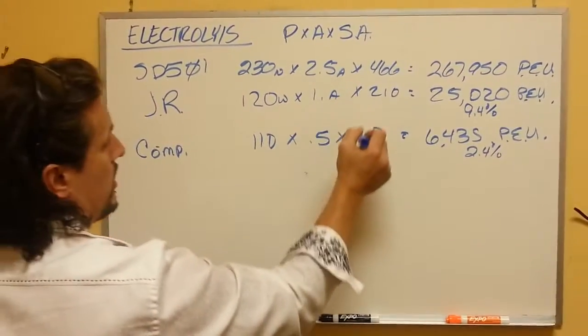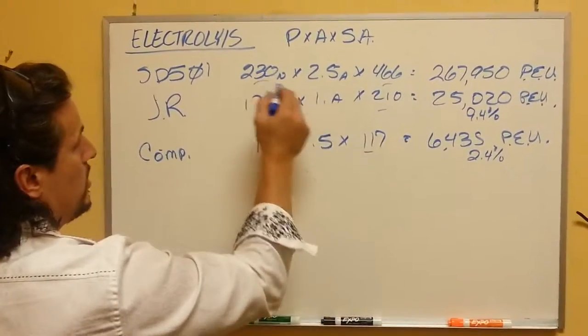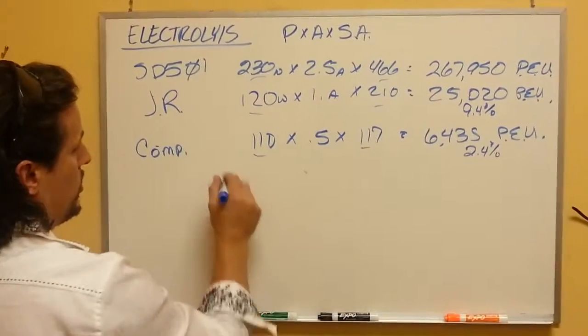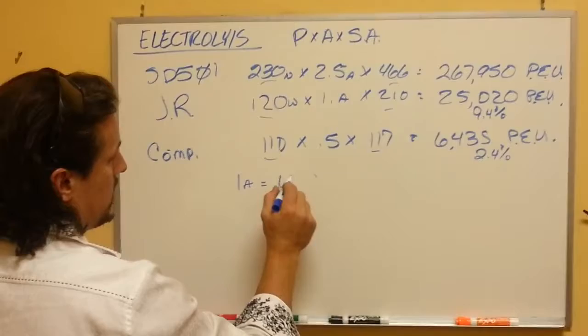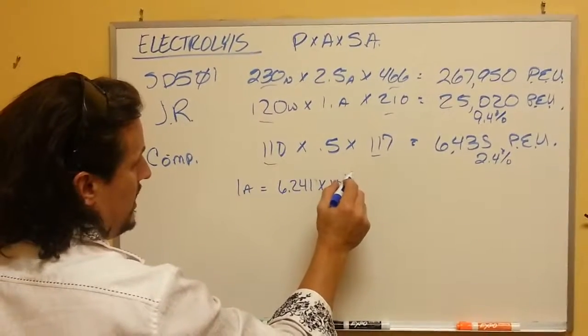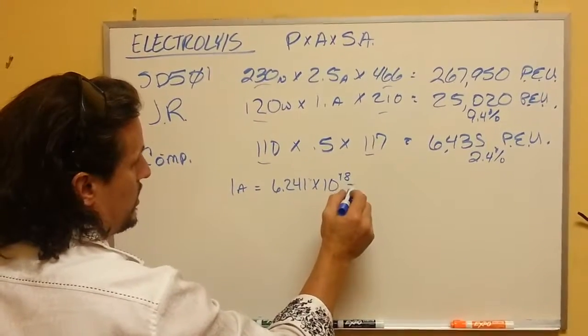The big secret to these is not just the power, but the amperage. 1 amp equals 6.241 times 10 to the 18 electrons.